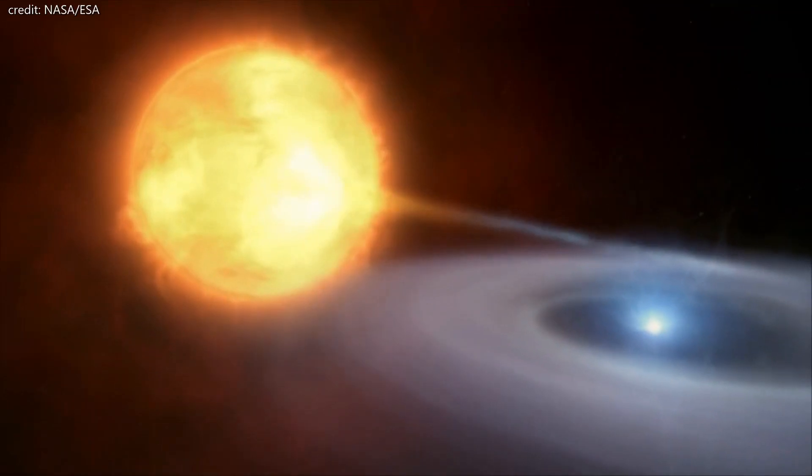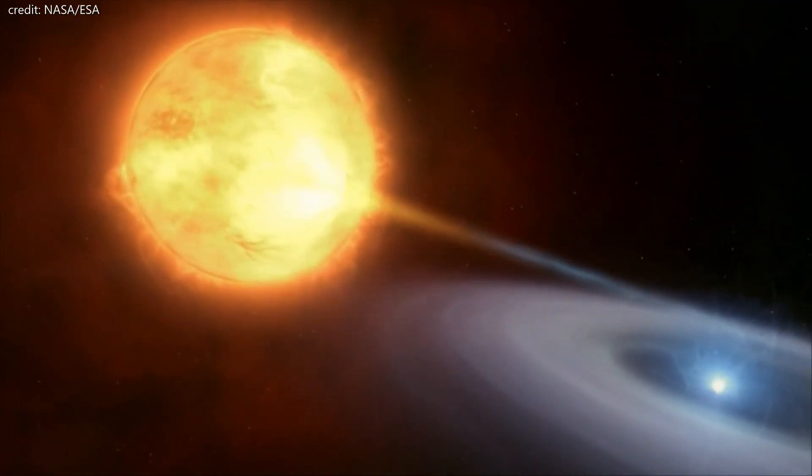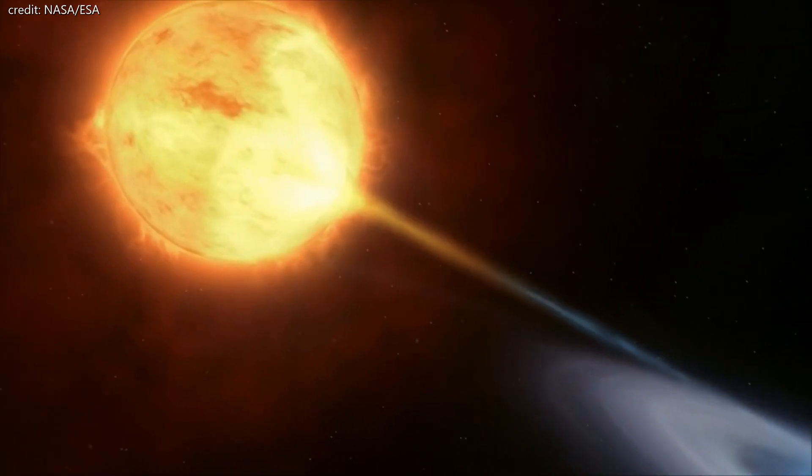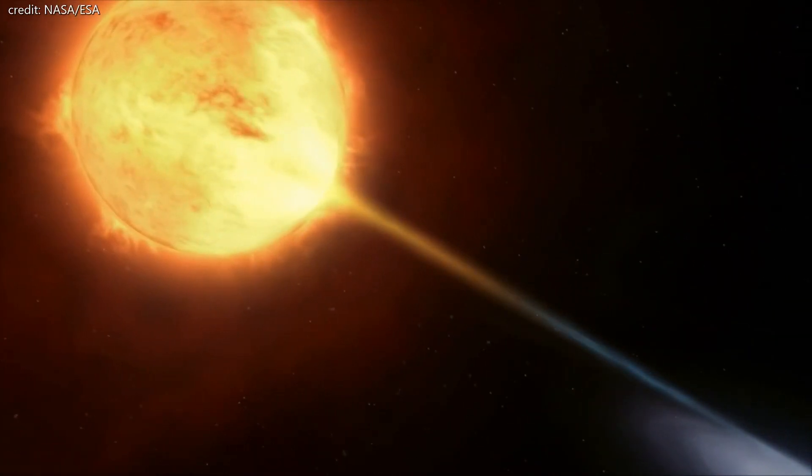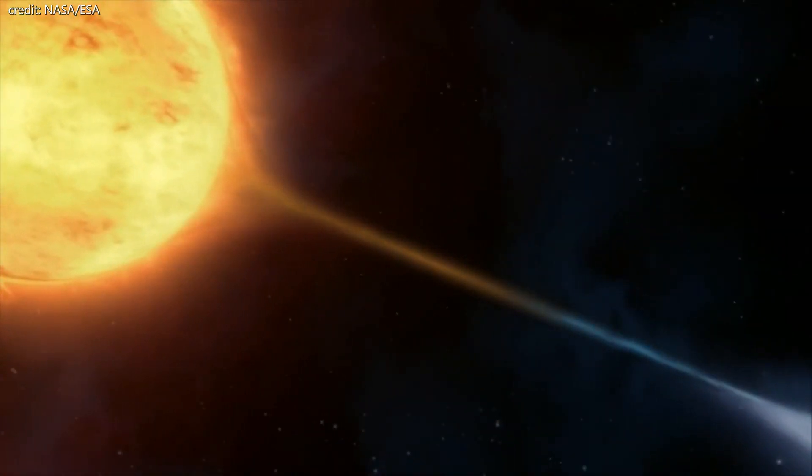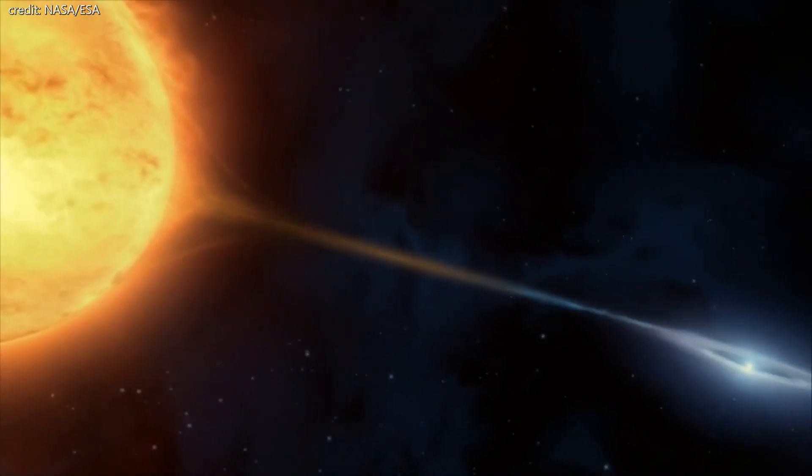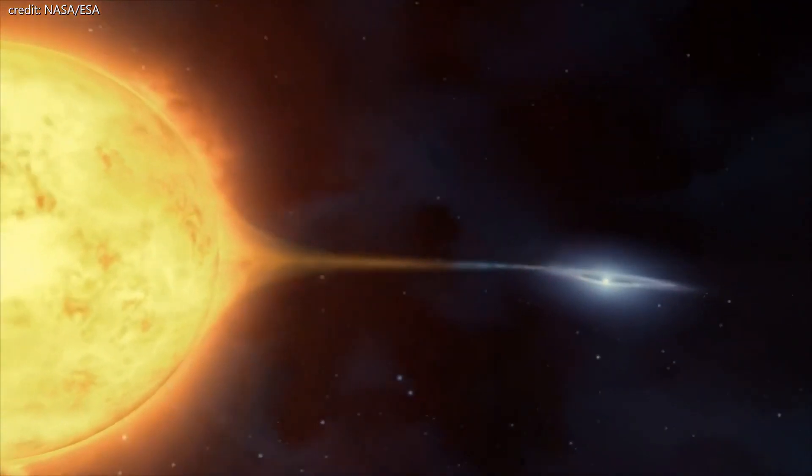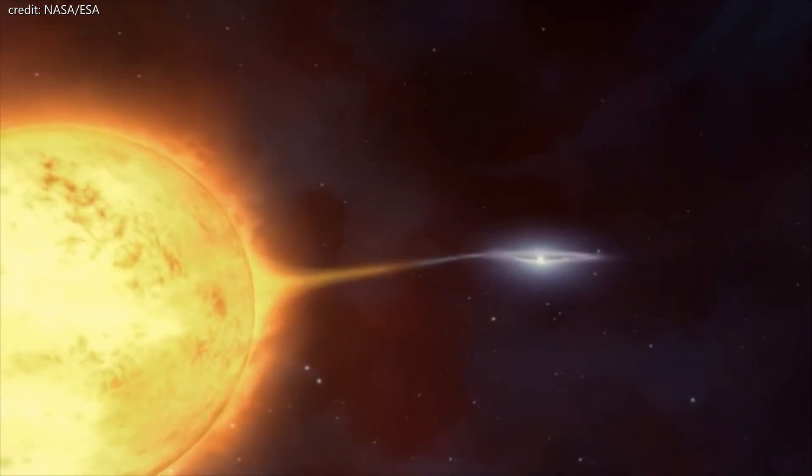Ranging from 0.6 to 1 solar masses for the smaller star and from 1 to 1.4 solar masses for its larger companion. The larger star is approaching the end of its days and has already ejected its outer layers of gas into space, whereas its partner is further evolved and is a small white dwarf.